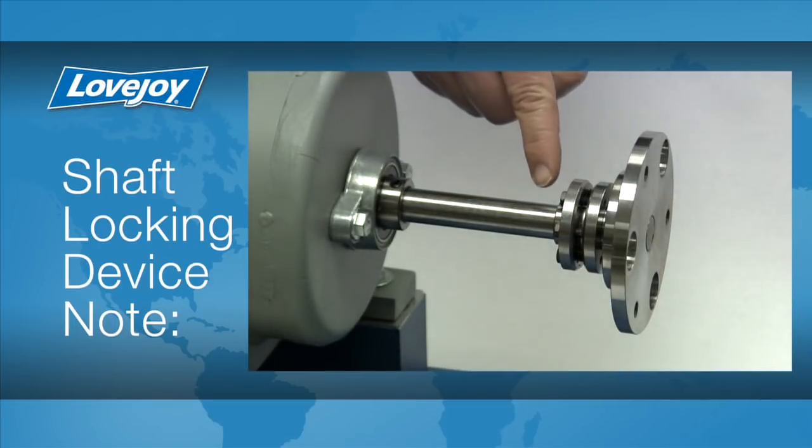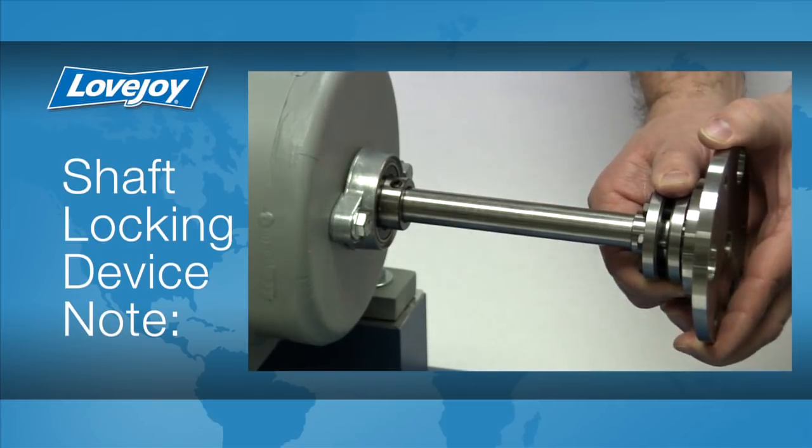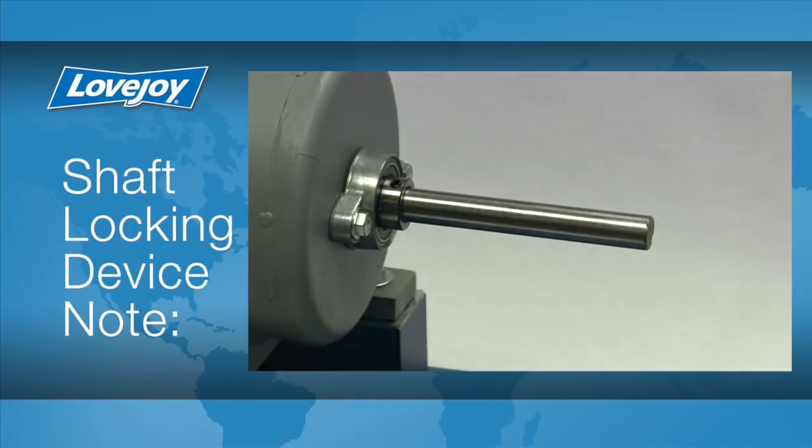When the SLD bolts are loosened, the coupling hub can be removed easily without deformation or damage to the hubs, shaft, or shaft locking device.